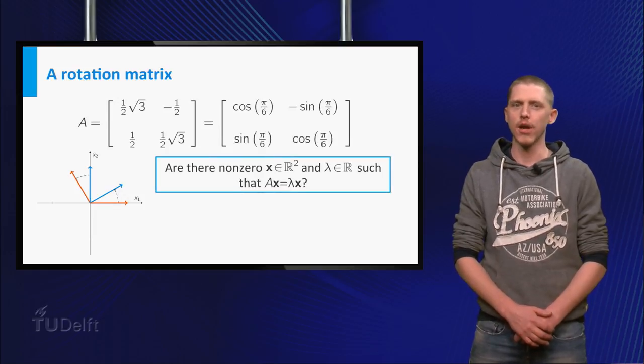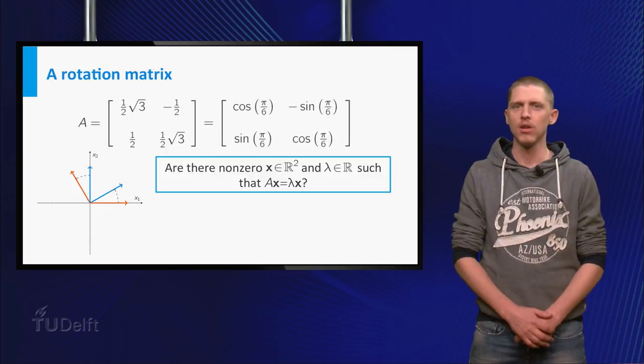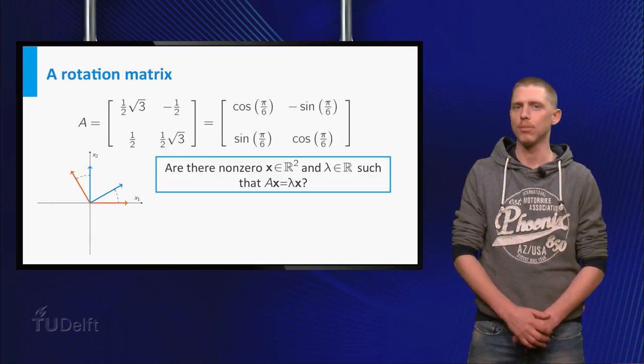Do you think there is a real vector x and a real number lambda, such that A times x equals lambda times x?